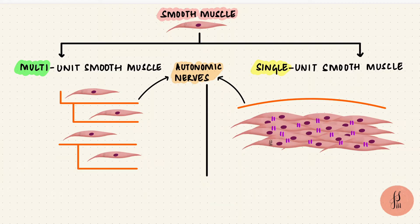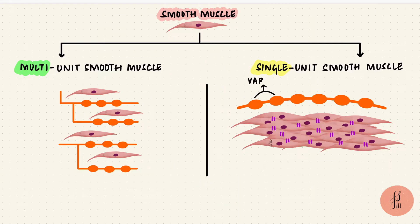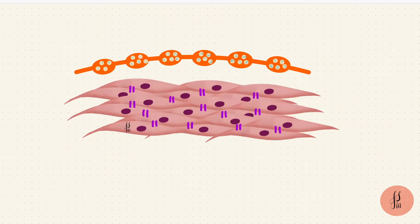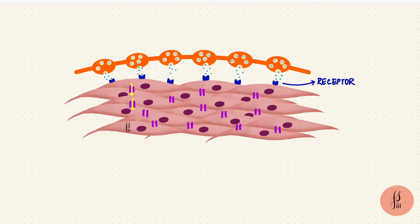Instead, the axons of nerves supplying smooth muscles have swellings called varicosities. It's these varicosities that form the junction. They have vesicles containing the neurotransmitter. When an action potential arrives, the vesicles fuse with the membrane and release the neurotransmitters, which then act on their receptors on the smooth muscle cells. The gap junctions ensure that the depolarization spreads through the whole unit, because this is a single unit smooth muscle, and these are diffused junctions.